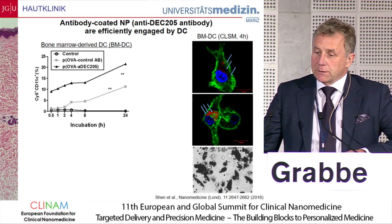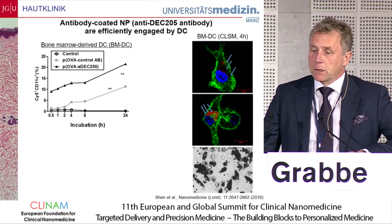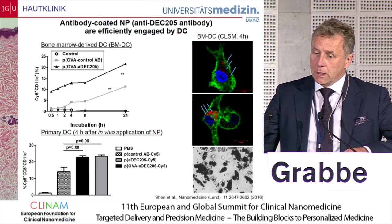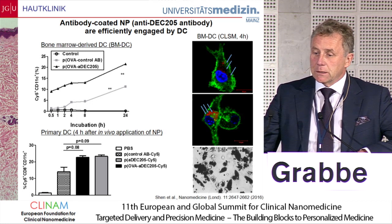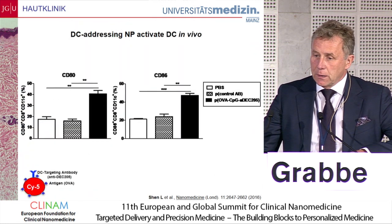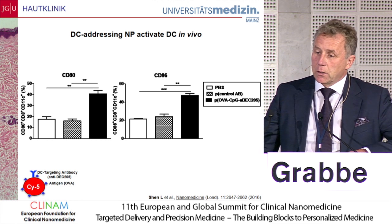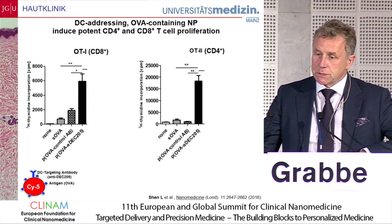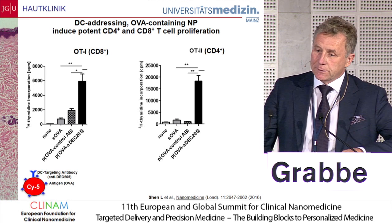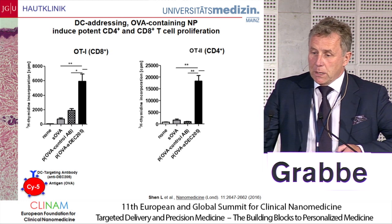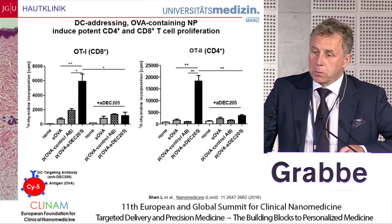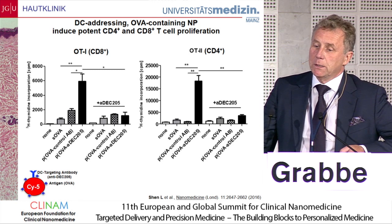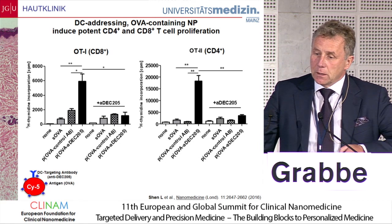As you can see here, dendritic cells in vitro readily take up these nanoparticles both passively — that's the light gray bar — as well as actively via DEC-205. Also in vivo, you can detect nanoparticles on dendritic cells. The nanoparticles activate dendritic cells as shown by surface co-stimulatory molecule expression, and they induce potent proliferation of both CTLs and T helper cells in vitro. This can be blocked by soluble blocking antibodies against DEC-205, confirming the uptake and T-cell stimulation is targeting-antibody specific.